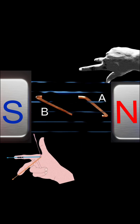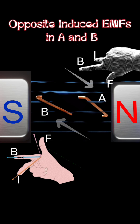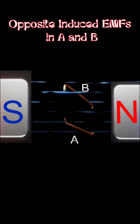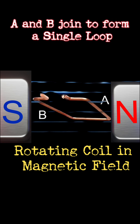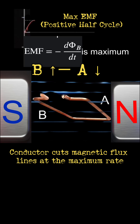When conductor A moves downwards and B moves upwards, both cut the magnetic field in opposite directions. By Fleming's right-hand rule, the induced currents in A and B are in opposite directions. When these two conductors are joined, they form a complete rectangular loop — the basic model of a single-loop generator.